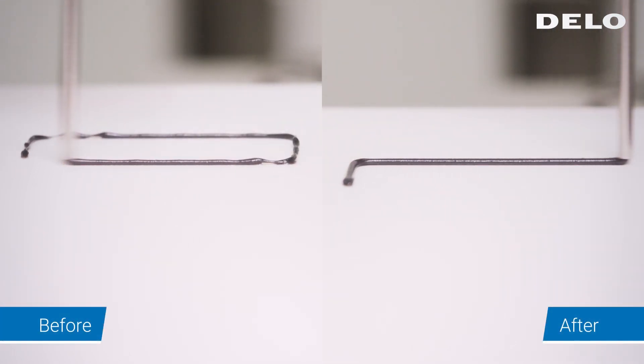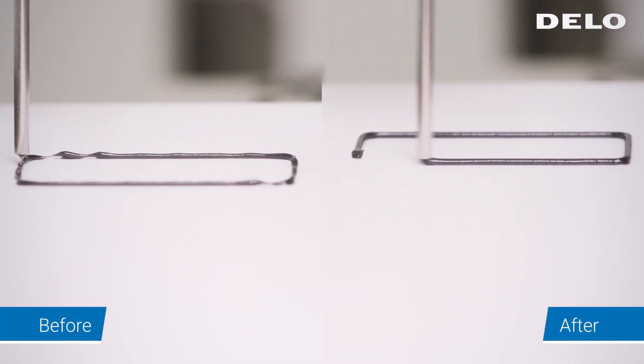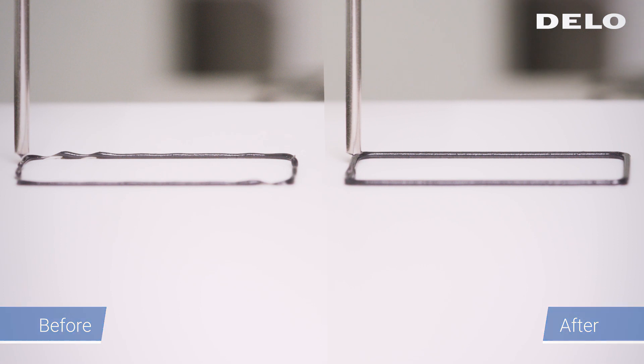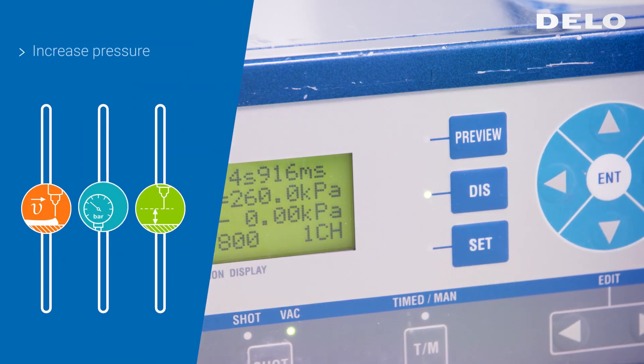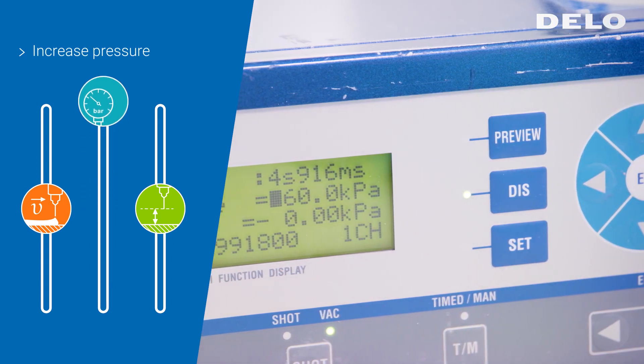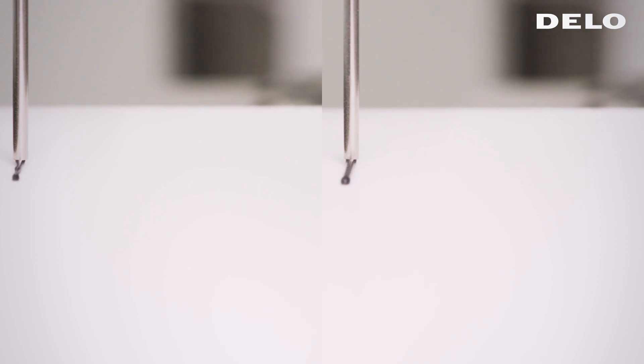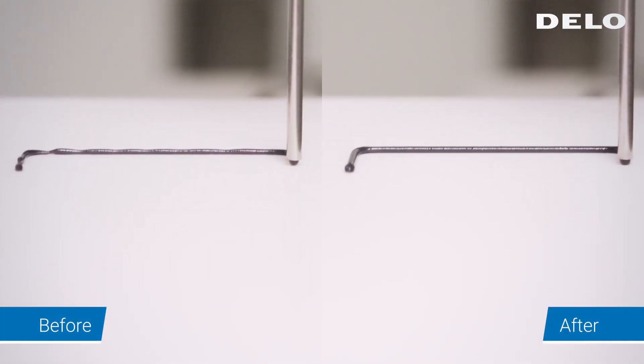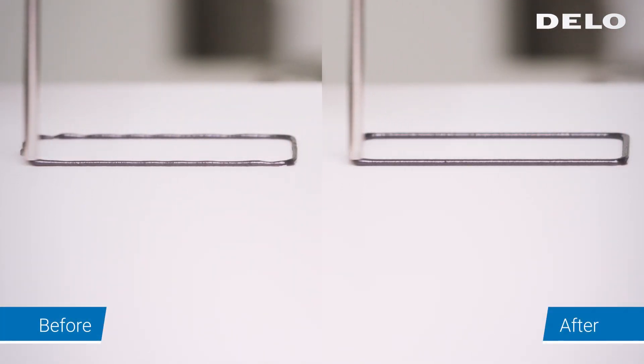You can see that the dispensing bead no longer has any gaps and is uniform. In the next step, you can increase the dispensing pressure. Thus, you achieve a significantly better result at the same dispensing speed.